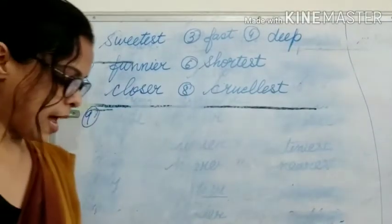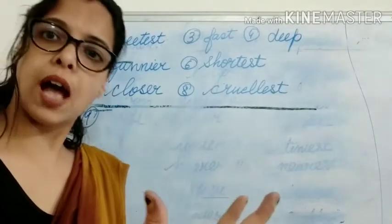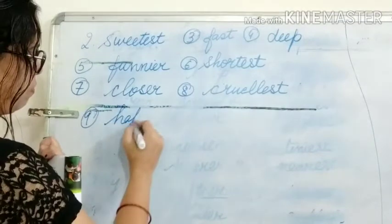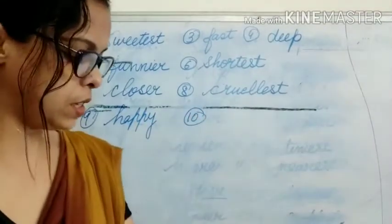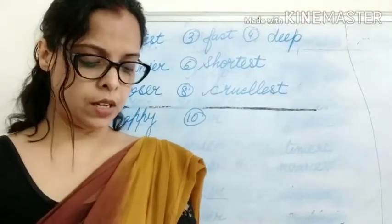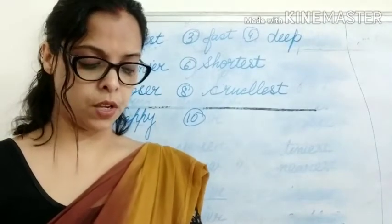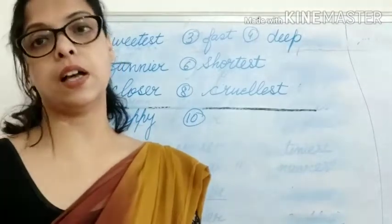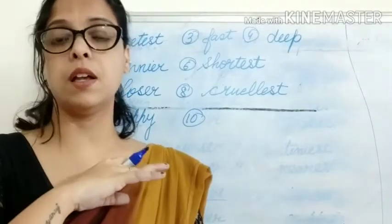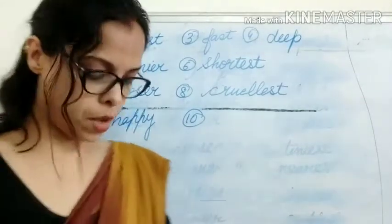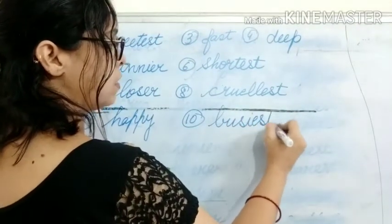Ninth: 'The ___ children sang and danced all day.' No comparison — simply talking about the children, so use the positive form: 'happy.' Tenth: 'This is the ___ time of the day.' The word 'the' is there, comparing among all times of the day, so 'busy' becomes superlative: 'busiest.' B-U-S-I-E-S-T.